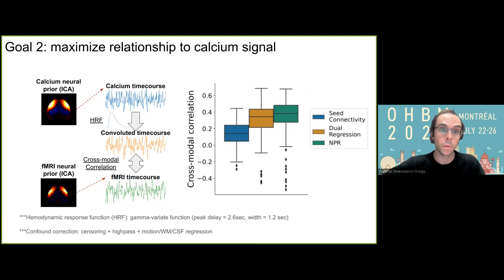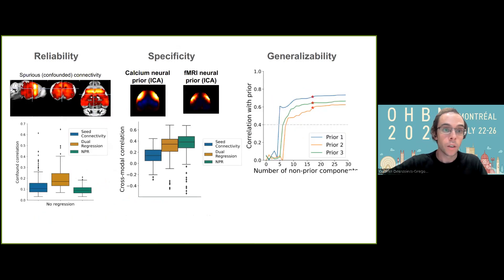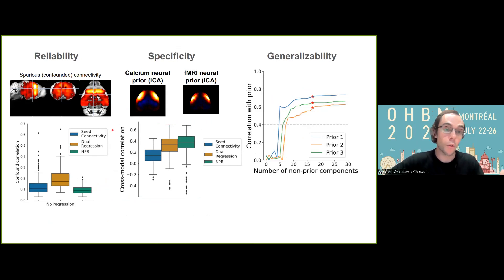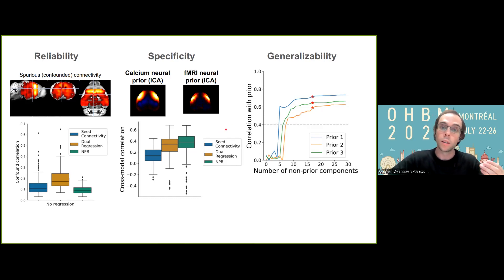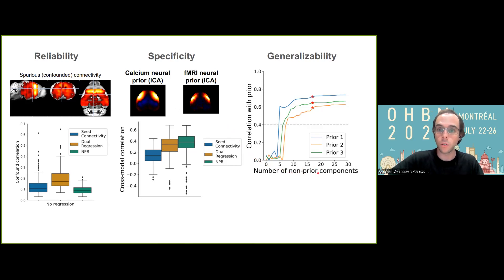Overall, what I want to emphasize is how NPR can automatize confound correction while maximally preserving neural signal of interest. In summary, I've provided arguments for how this framework can improve reliability as a framework for confound correction, as well as preserving specificity to neural signal of interest. It can be a generalizable approach, given that the only manual decision step is selecting the number of non-prior components, which can be easily automatized with the two criteria shown, and we've demonstrated this works across a variety of datasets and modalities.